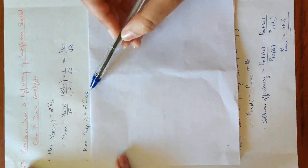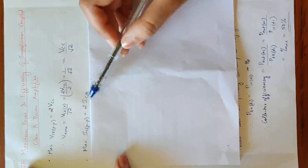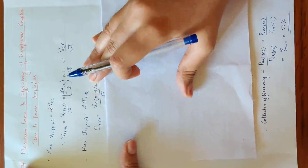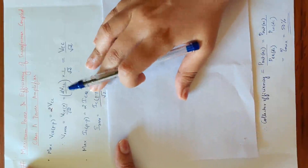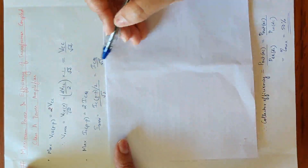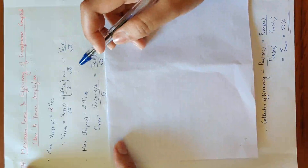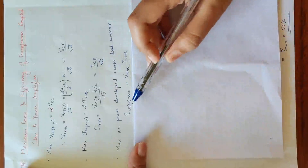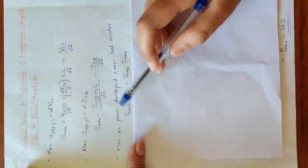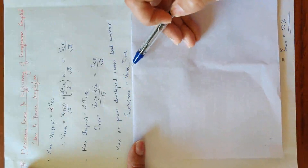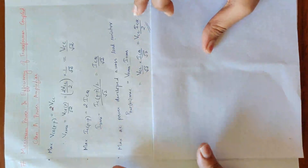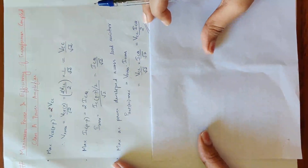Now IC collector current — peak-to-peak is 2 ICQ. RMS comes from peak-to-peak divided by 2, then divided by root 2, giving ICQ divided by root 2 for RMS current. This product gives us the output AC power — maximum AC power developed across the load resistor, which is VRMS into IRMS. Here we substitute VCC and ICQ divided by 2.